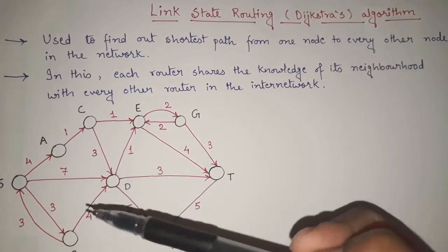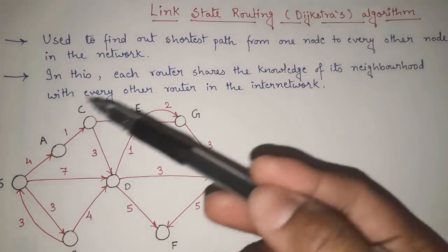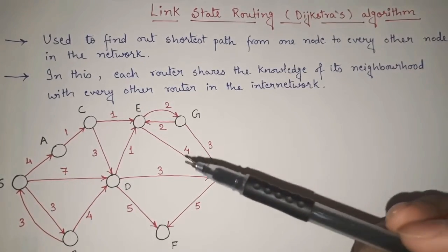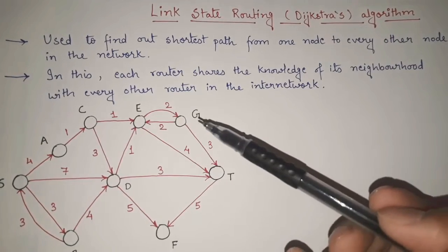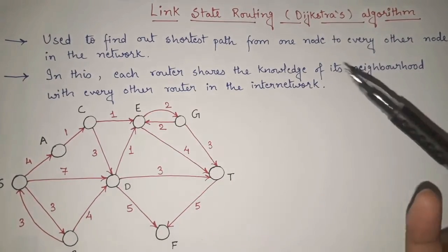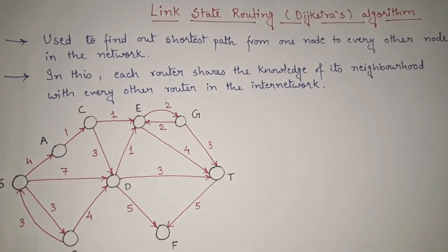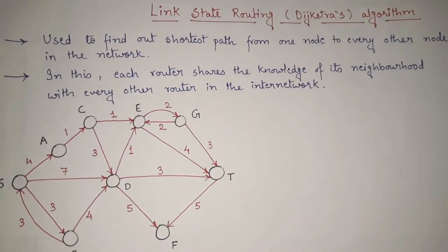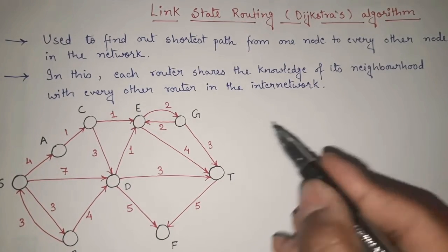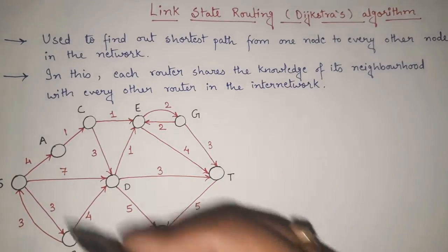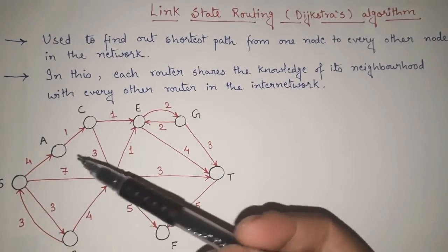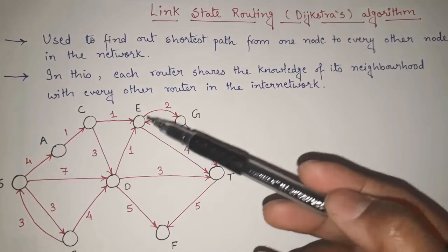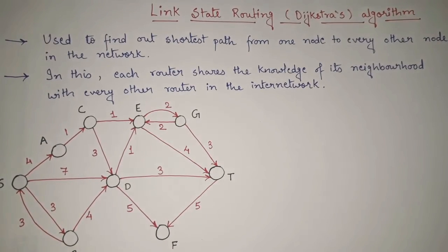We want to apply Dijkstra's algorithm on this graph and find out the shortest distance from every node to every other node — that is our main aim. First of all, we write down all the nodes present: S, A, B, C, D, E, F, G, and T — 9 nodes in total.